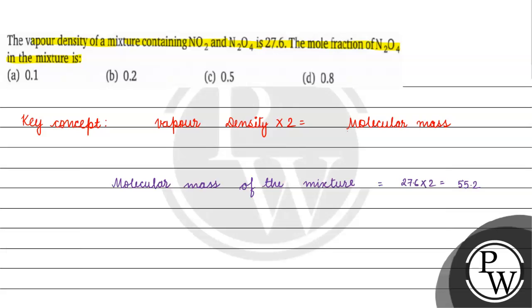Now if we need to calculate molecular mass, we need to calculate number of moles of the mixture. Number of moles of mixture equals number of moles of N2O4.